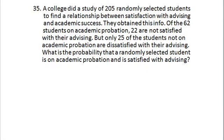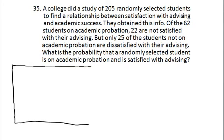A college did a study of 205 randomly selected students to find a relationship between satisfaction with advising and academic success. Of the 62 students on academic probation, 22 are not satisfied with their advising. But only 25 of the students not on academic probation are dissatisfied with their advising. What is the probability that a randomly selected student is on academic probation and is satisfied with advising? This is a Venn diagram type problem involving two circles: academic probation and satisfaction with advising.